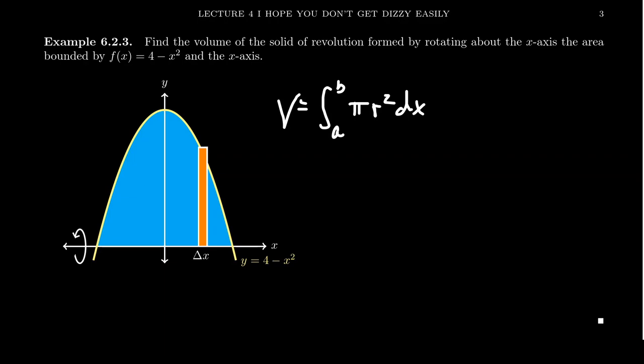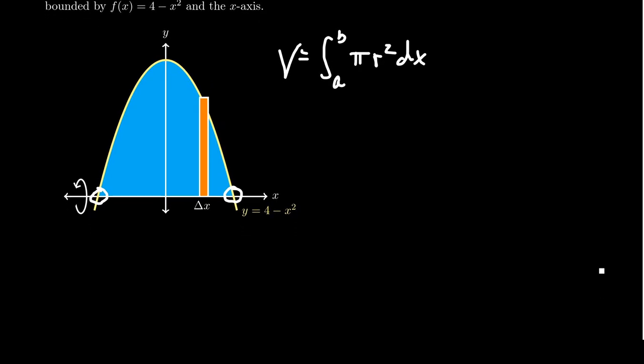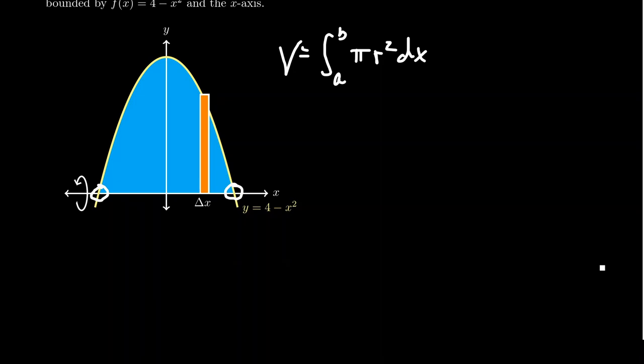what are the bounds right here? Now, with the picture, we can see very clearly that we're looking for these values right here. We need to find the x-intercepts of this region here. And so, we're looking for when f(x), which is 4 minus x squared,